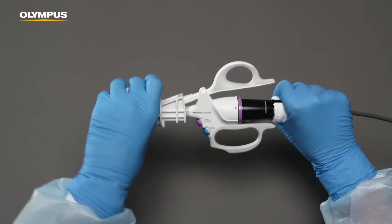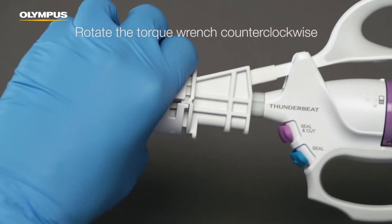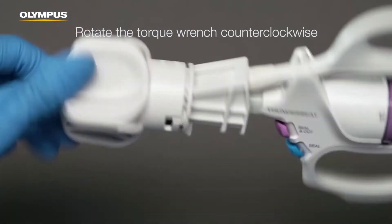Hold the stabilizer firmly and rotate the torque wrench counter-clockwise until the transducer is loose.